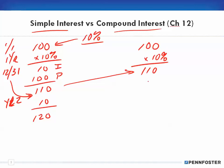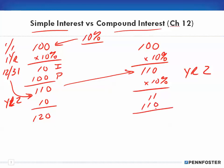In year two under compounding, we get ten percent of $110, not ten percent of $100. So the interest earned is $11. Adding that to the account balance, at the end of year two we have $121 instead of $120. That's only one dollar more, but we're only talking about a $100 one-time deposit here.